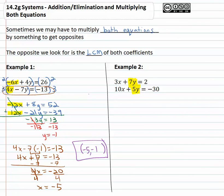So let's try and get opposites in front of the y, seven and five. The least common multiple there is thirty-five, so we'll have to multiply the first equation by five on both sides.